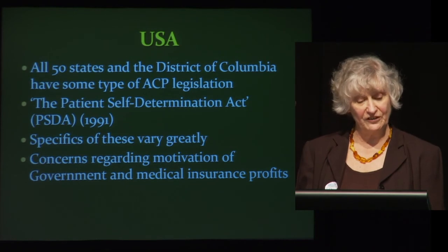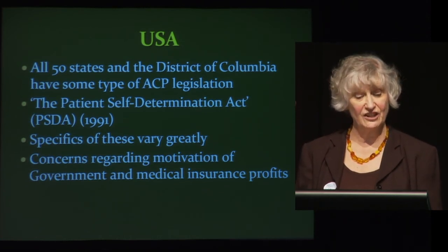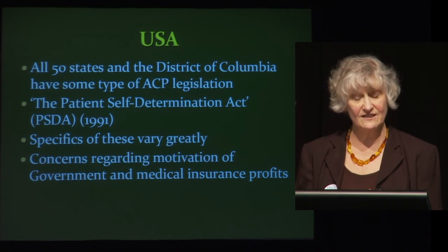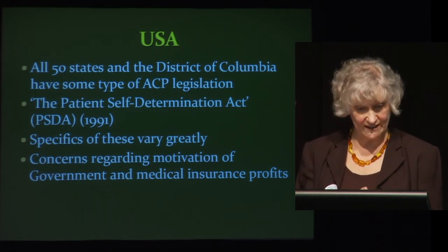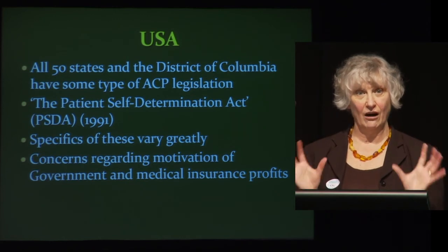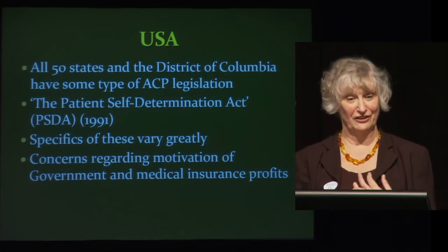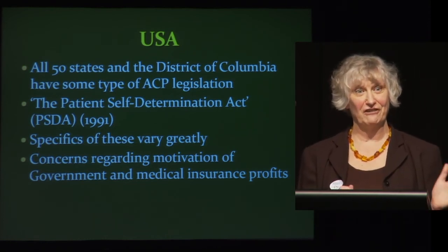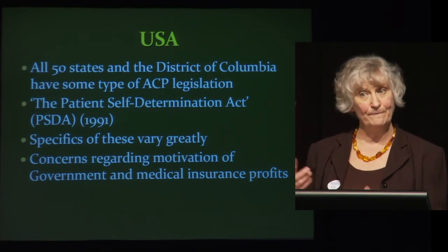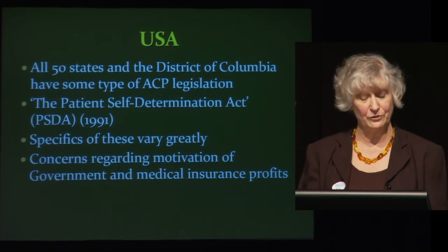Just a quick overview of what's happened in the USA: all 50 states and the District of Columbia have some type of advanced care planning legislation. Oregon since 1994, Washington since 2008, and Montana since 2009 all have physician-assisted suicide. Oregon apparently has the highest level of people with advanced directives or advanced care plans — there's a lot of media push — and my take is they're making sure people are really clear about what they do want. That discussion is quite big in the UK at the moment, and people talk about the slippery slope and the motivation for physician-assisted suicide.